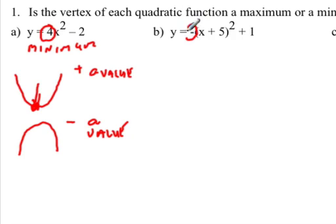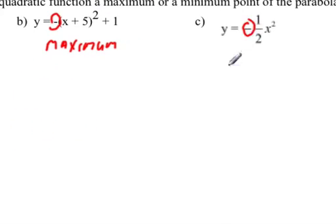And so here, a is negative, so this is going to be our maximum. This is negative, so this is also going to open downwards, so again, we're going to have a maximum.